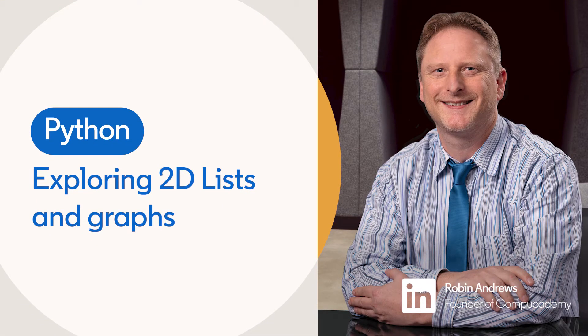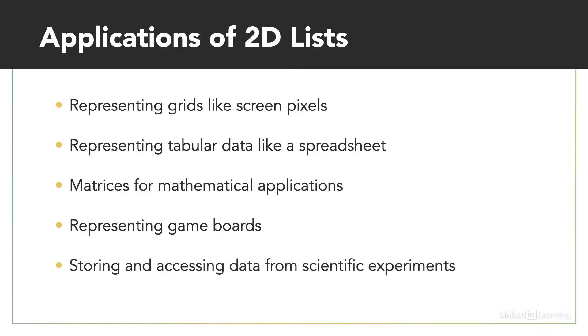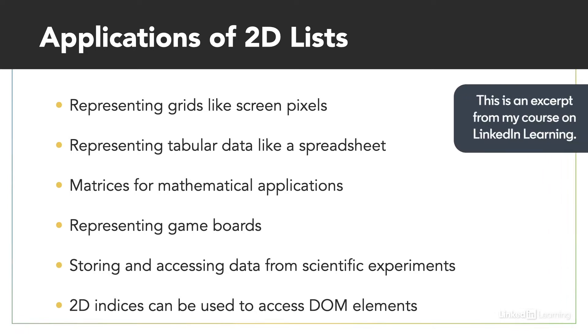2D lists are an important data structure with many applications. Some of the more common ones are listed on the slide. For example, any situation where we have a grid, such as screen pixels, or in our case in this project, the representation of game boards and mazes and such like.